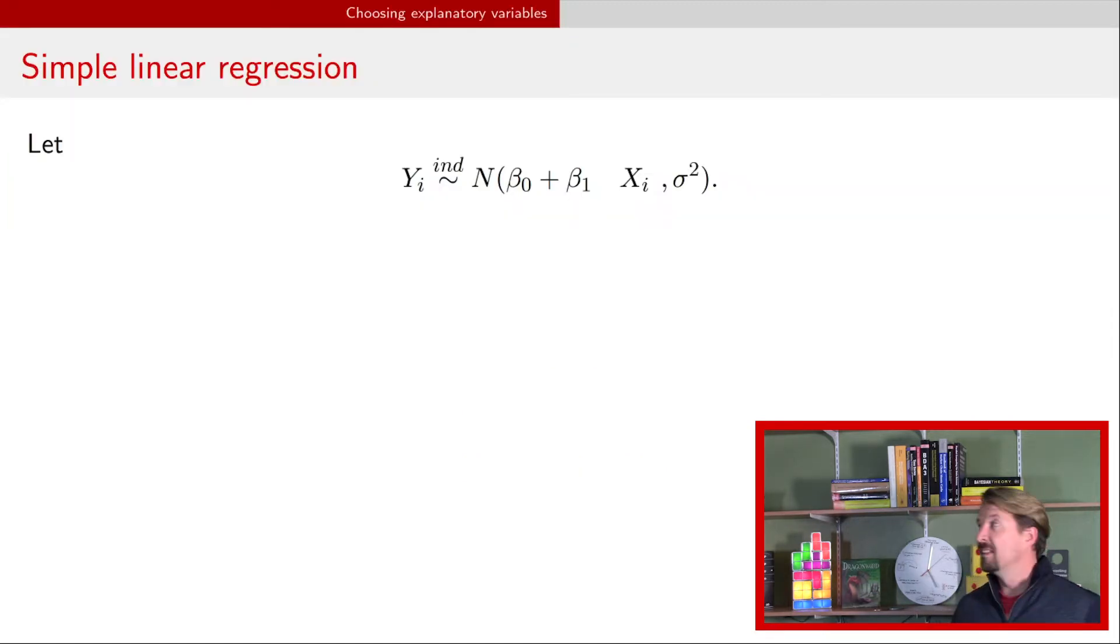I just want a quick reminder. This is our simple linear regression model. The model basically says we have an observation or a response variable Y. It's independent, normally distributed. It has a mean β₀ + β₁ times the explanatory variable value, that's the xᵢ, and it has a variance of σ². Previously, we talked about how to interpret this model if you just have an explanatory variable. But really, this model is much more flexible than it may seem at first glance.